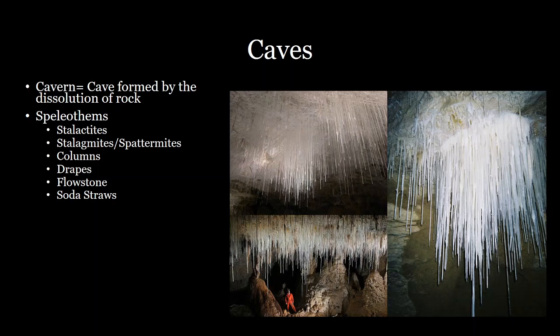Next is a really cool feature: soda straws. Soda straws are a lot like stalactites, but stalactites have water dripping down that deposits on the outside, whereas soda straws are only one drop in width, hollow, and water flows down the center. As it reaches the end, some of that calcite deposits out, forming this vertical straw that hangs from the ceiling. They tend to be extremely fragile, and if the straw becomes blocked, they can form into stalactites because water then has to flow down the outside instead.